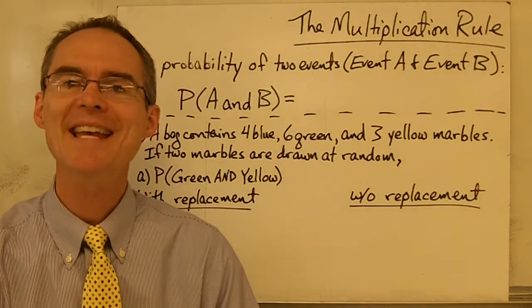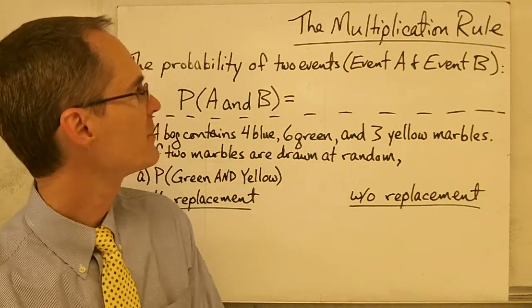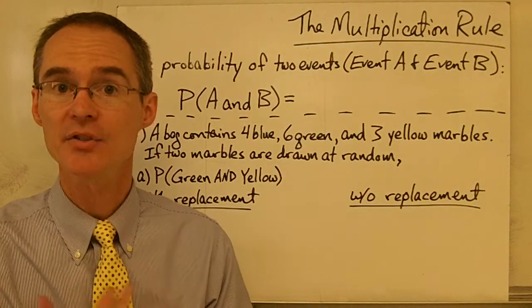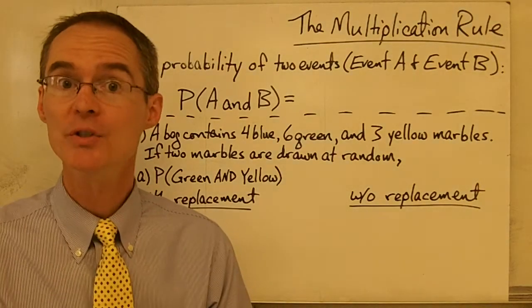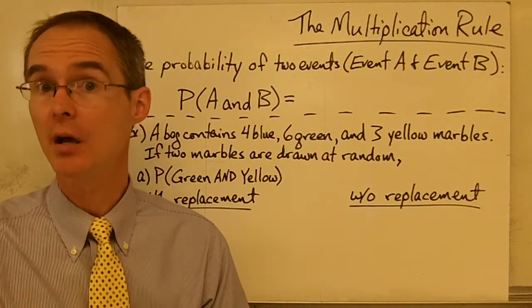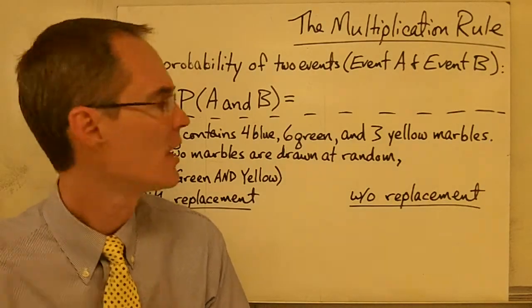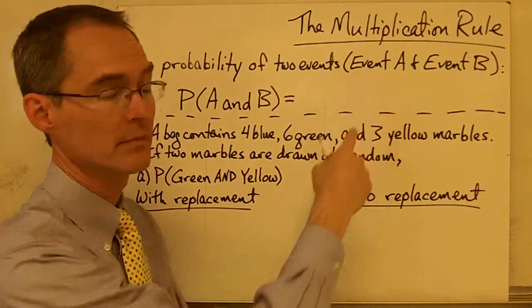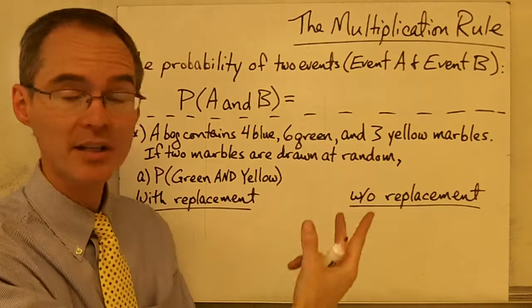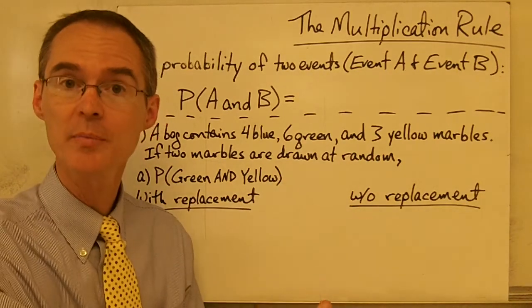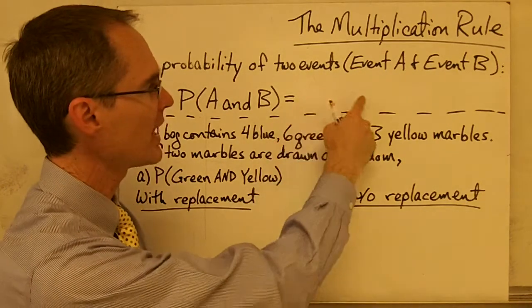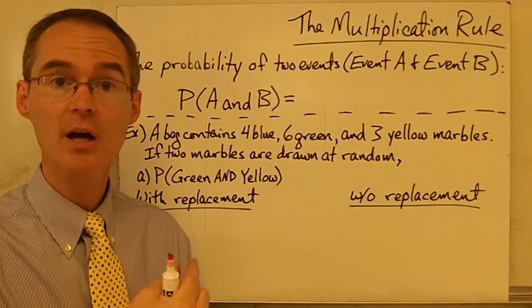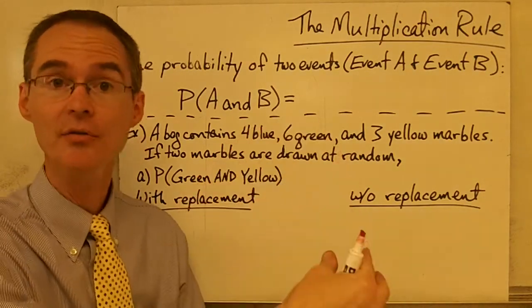In this video we're going to talk about something called the multiplication rule. As we've seen before, if we want to calculate the probability of two events happening together — say, flipping a coin two times and finding out what's the probability of the coin coming up heads both times — well, we can just calculate the probability of the first event and the second event and multiply those two probabilities together.